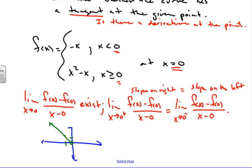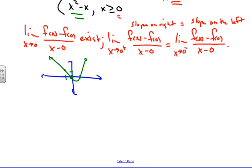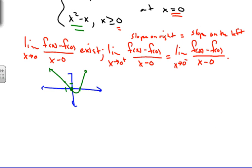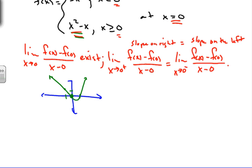On the other side, we have the other piece of the function. Plugging in 0 gives 0, and plugging in x = 1 gives 1, so that curve goes upward. To figure out the derivatives, we're going to find the slope values on the right and left side by using the appropriate piece of the piecewise function.